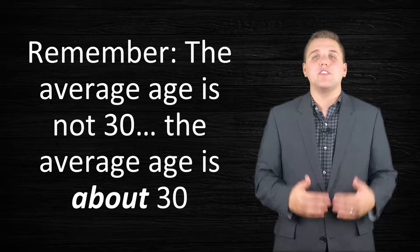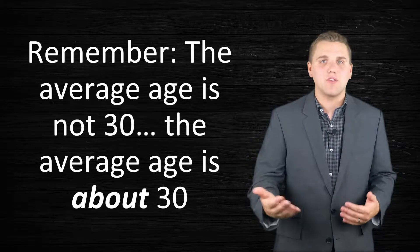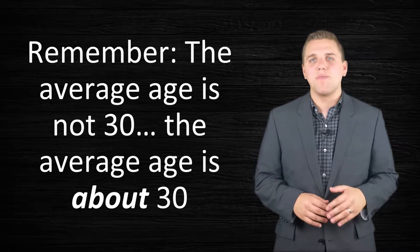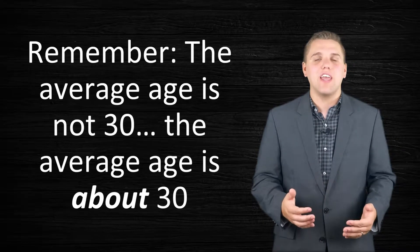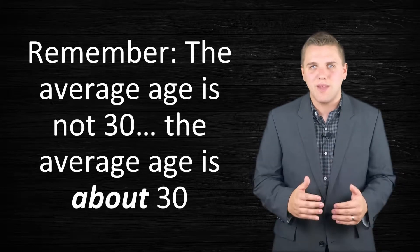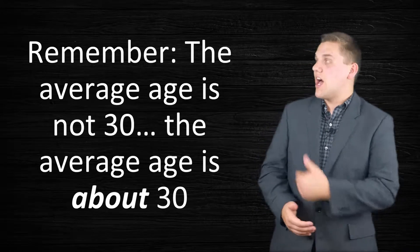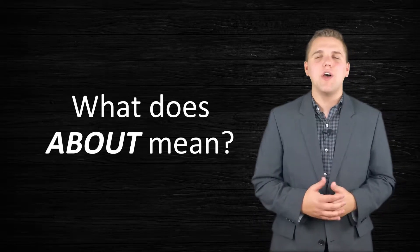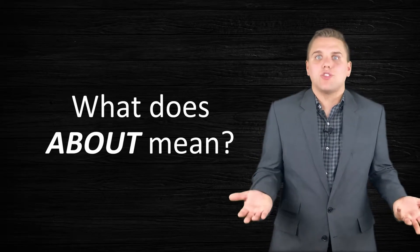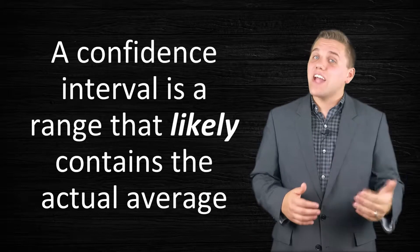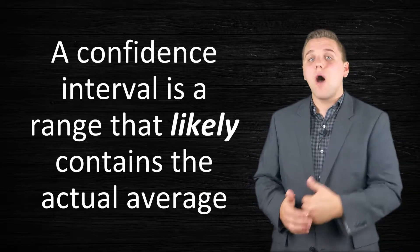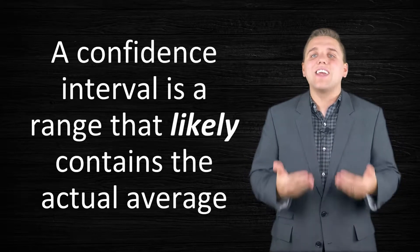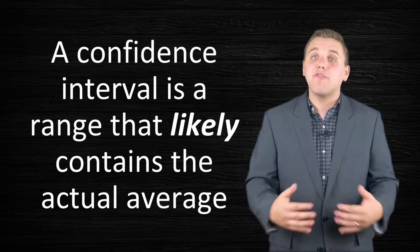In the last lecture we were talking about these very important words: about or around. In this lecture I'm going to keep the numbers a little bit easier to work with. Remember that when you calculate an average of 30, that doesn't necessarily mean that the average age is 30 — it means that the average age is about 30. The purpose of this lecture is to address this really important question: what does 'about' mean? Like, what's close to 30? What's around 30?